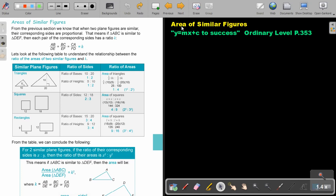In this video, we are going to focus on area of similar figures. You will find this on page 353 in the Namibia Ordinary Level Mathematics textbook Y equals MX plus C to success.